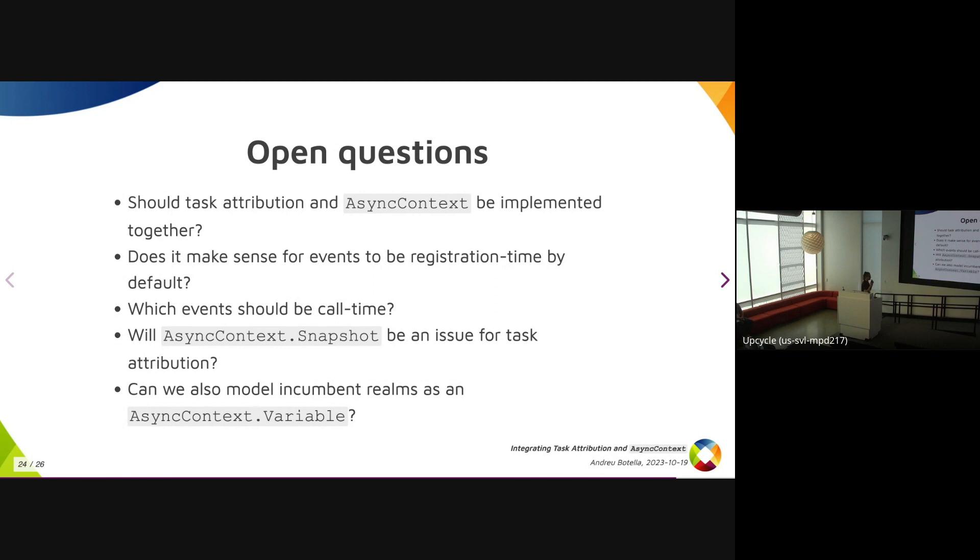And one of the things is there's something in the HTML spec that tracks incumbent realms in order to figure out in which windows some things should run when you have multiple iframes and things going into iframes and back and complicated stuff like that. Apparently that could be able to be modeled as an async context variable. I don't understand the details, but maybe it could save on spec complexity in that sense.